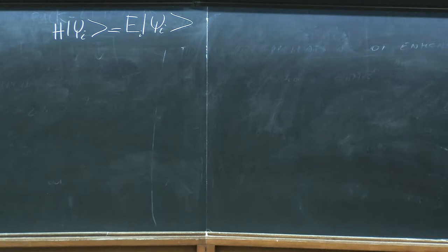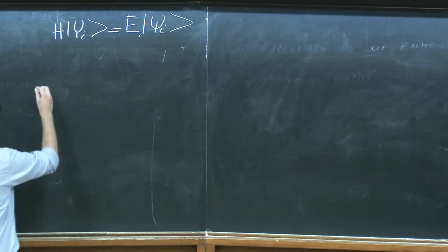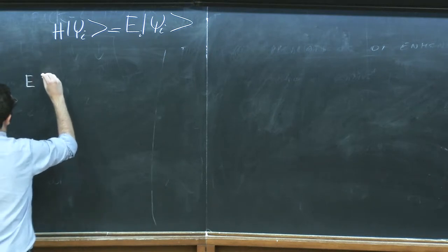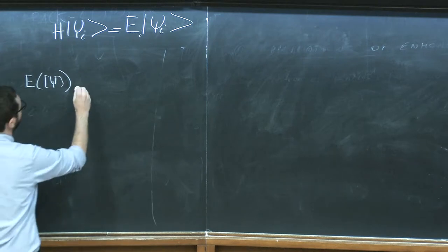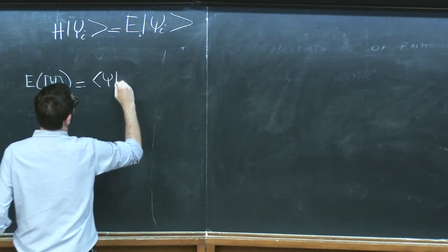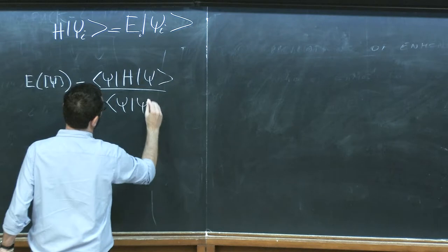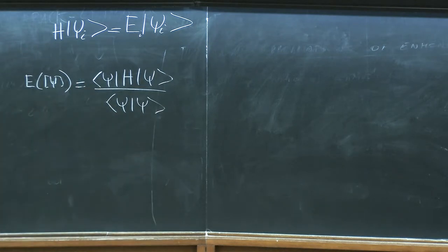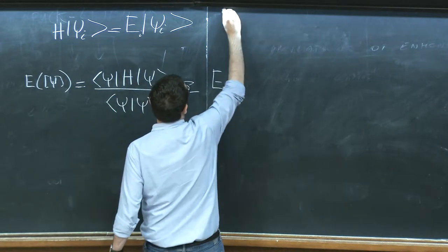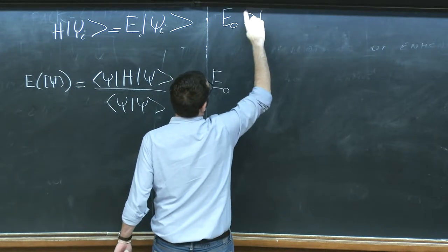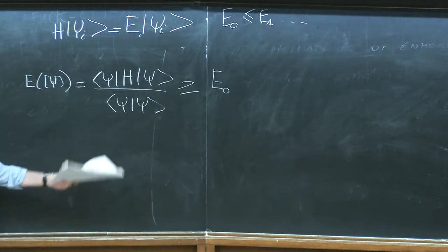From the variational theorem, if I define E of ψ as the expectation value of the Hamiltonian over a state ψ, I know this object is greater than or equal to the ground state energy — assuming eigenstates ordered accordingly. So from the variational theorem, finding the ground state can be cast as an optimization problem.